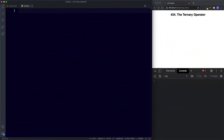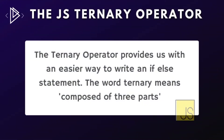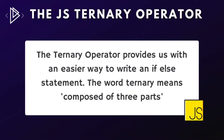Welcome back to lesson 24. In this lesson we're going to finalize our understanding on conditional statements by learning all about the ternary operator. A couple lessons ago we learned all about the if-else statement and how it can be used to test a value to see if it's true or false. The ternary operator does the same thing but in a much cleaner and easier way.